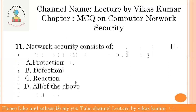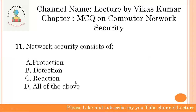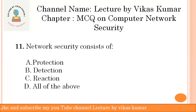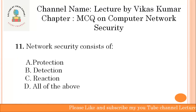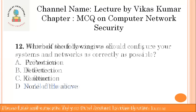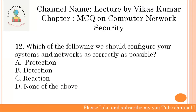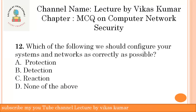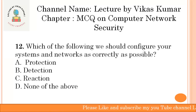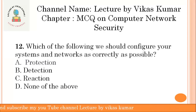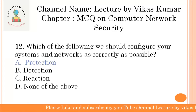Network security consists of protection, detection, and reaction — all of these answers are correct. Which of the following means we should configure our system and networks as correctly as possible? Among protection, detection, and reaction, protection is the correct answer.